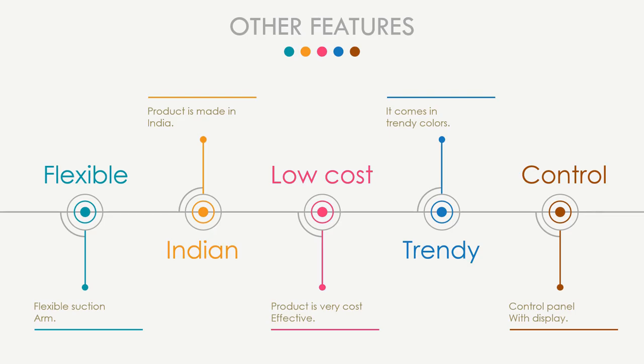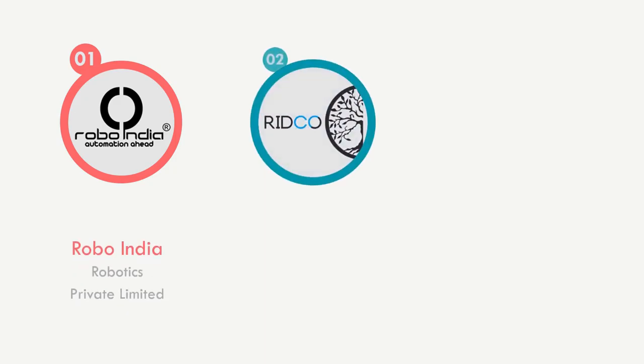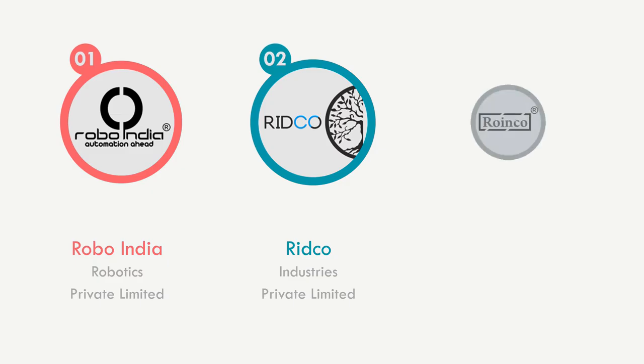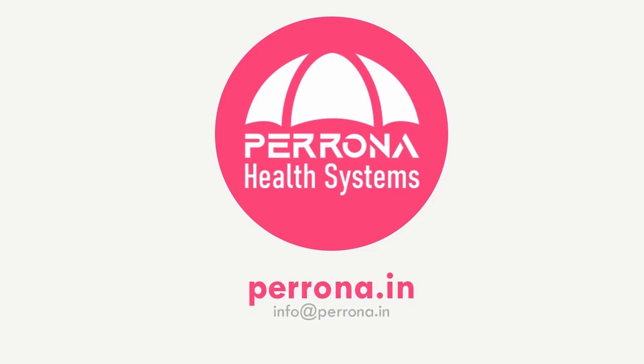EDS-2000 has a control panel with a display showing working mode of suction and spotlight. Perona Health System is supported by various brands including Robo India Robotics Private Limited, an electronic manufacturing company with expertise in AI, IoT, robotics, and automation, which has won prestigious national and international awards. Redco Industries Private Limited is an OEM of various industrial products, and Perona Health System is a subsidiary of Redco. Rohingo is an electronics brand offering controllers, boards, and circuits used by Perona Health System.